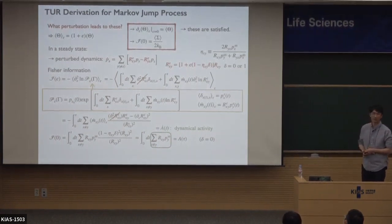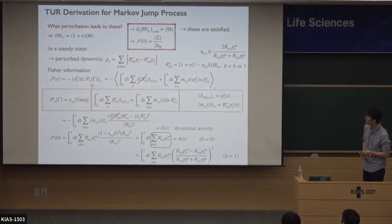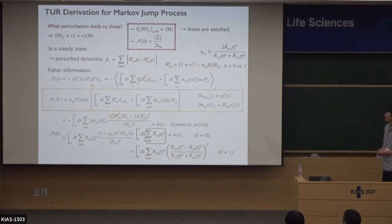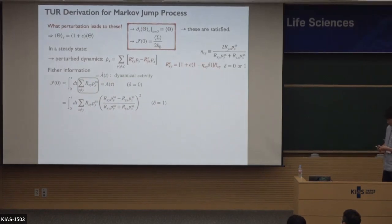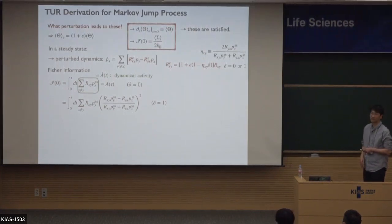Now consider delta equal to zero versus delta equal to one. Delta can be either one or zero. When we set delta equal to one and use the definition of eta_xy, this term becomes equal to that one. Even though we start from the same master equation, the Fisher information becomes different depending on the delta value: when delta equals zero it is one expression, and when delta equals one the Fisher information becomes a different expression.